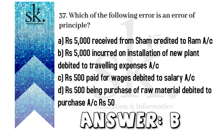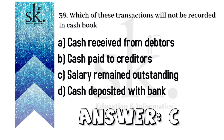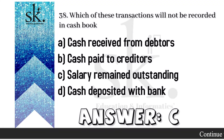The next question: which of the following errors is an error of principle? The answer will be B — rupees 5,000 incurred on installation of a new plant was debited to traveling expenses account. It's a mistake with respect to capitalization of the installation expense to the plant account, posted instead to traveling expenses. Therefore it's an error of principle.